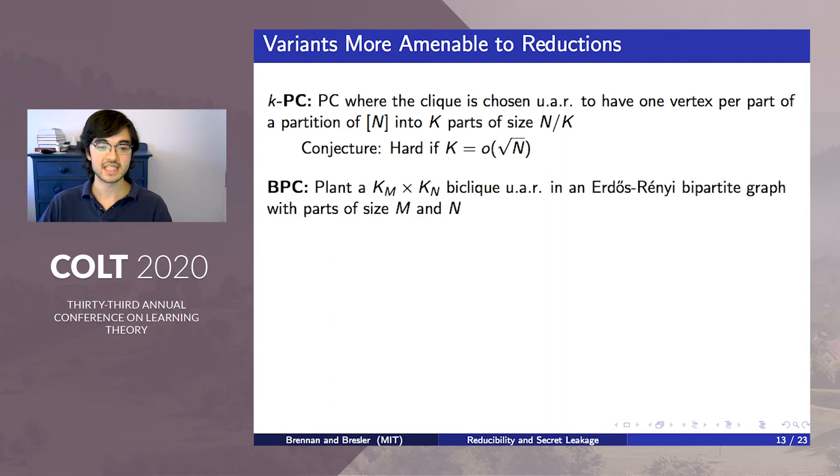The second is a bipartite variant of PC, where a km by kn complete bipartite subgraph is planted uniformly at random in an m by n bipartite Erdős-Rényi graph. The natural generalization of the PC conjecture in this bipartite case is that the problem is hard when km and kn are smaller than the square roots of the sizes of their respective sides.